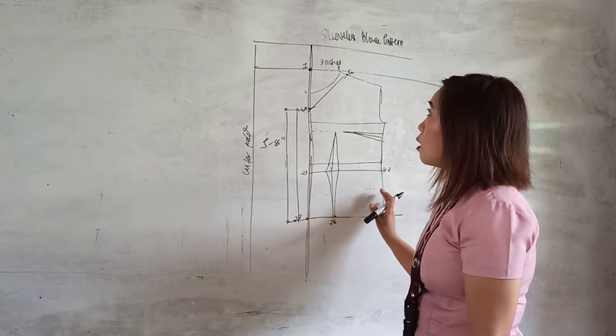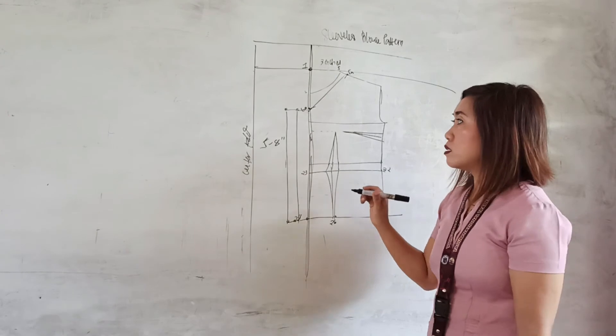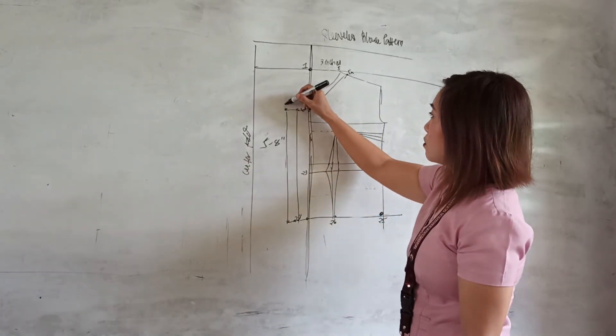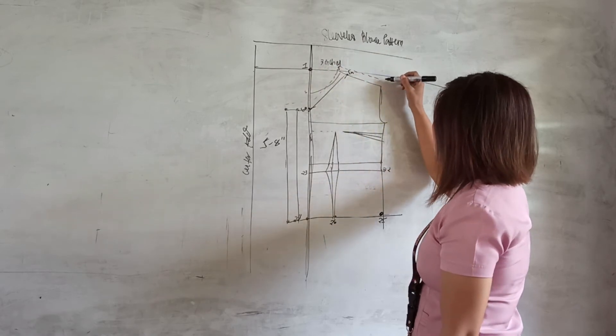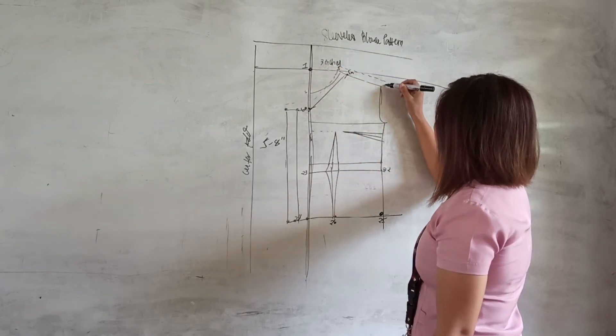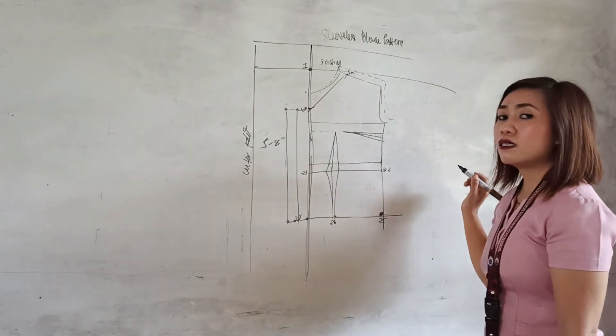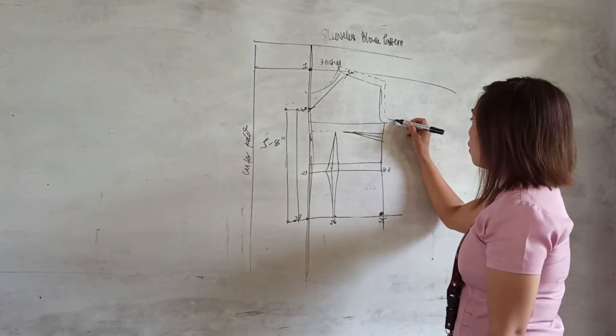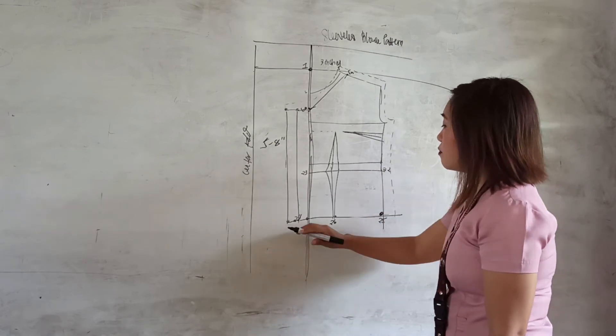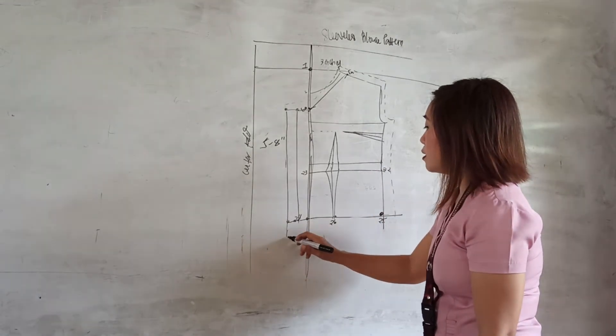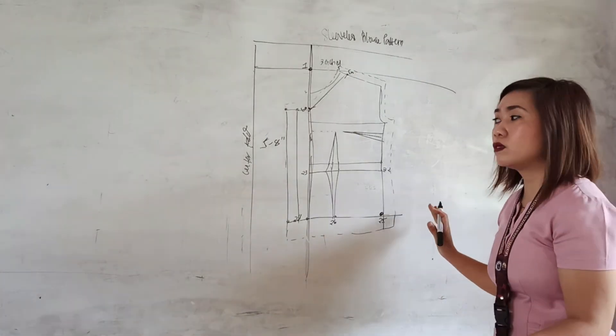This is now our sleeveless blouse pattern. Now we are ready to add allowances. For the neckline, this is only one-half. For the shoulder line, this is three-fourths. For our armholes, five-eighths. There are no allowances added inside, they should be outside. For our sides, this is one inch, and for the hemline, this is one and one-half inches.